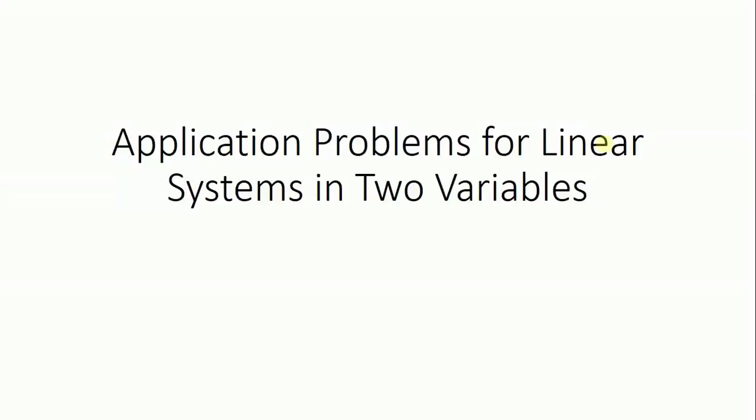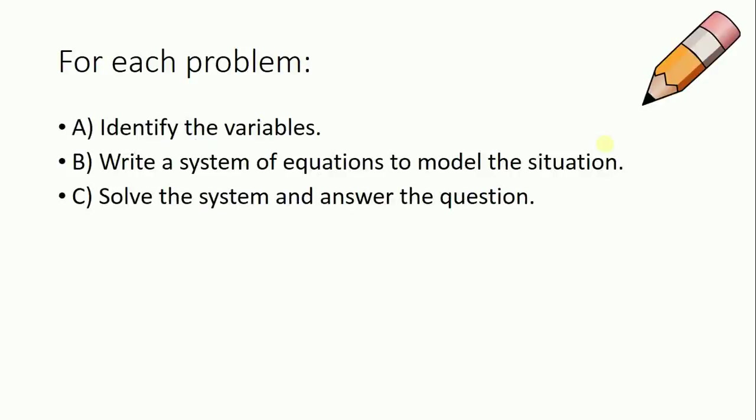Hello, Legacy Savers. Today we're going to look at application problems for linear systems in two variables — basically story problems of systems, which is pretty much why we would learn this information anyway. Here are the steps we're going to take for each problem today: first, identify the variables; write a system of equations to model the situation; solve it; and answer the question using a complete sentence. Let's look at the four examples for today.